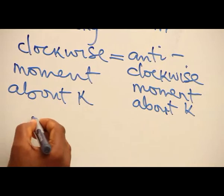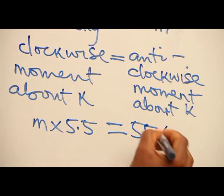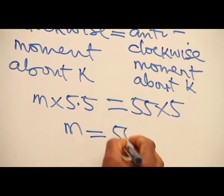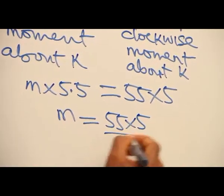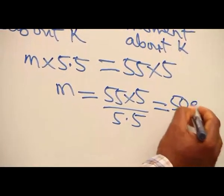So we have M times 5.5 equals 55 times 5. So the mass M is 55 times 5 divided by 5.5. That gives us 50 kilograms.